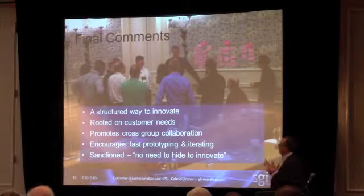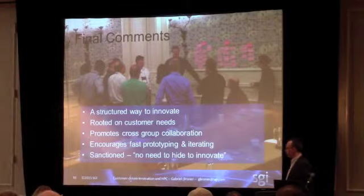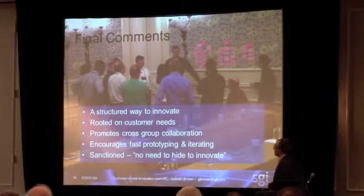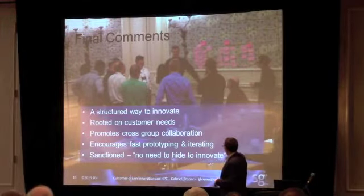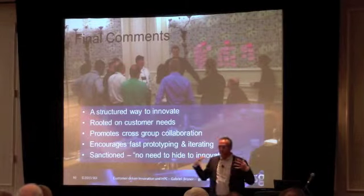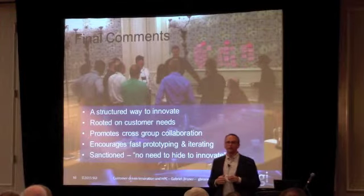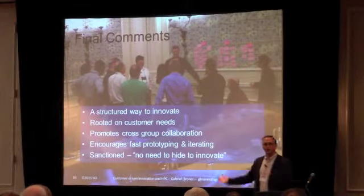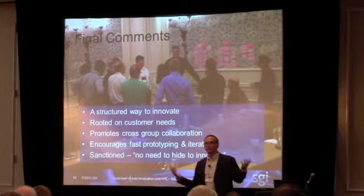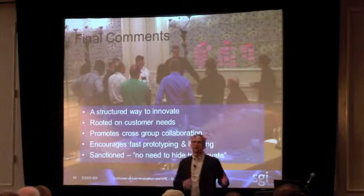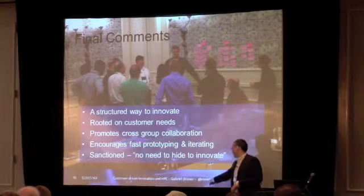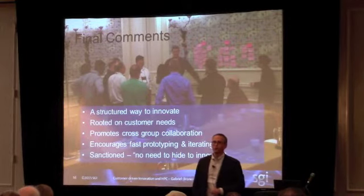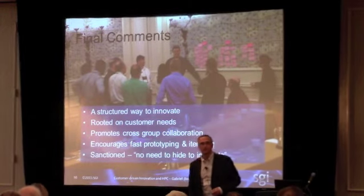My final comments are: this is a structured way to innovate. Most places don't have a structured way to innovate. It's rooted on customer needs. It promotes cross-group collaboration — you bring people from different areas to solve problems and work together; it breaks the silos. It does encourage fast iteration. And one thing that's important: it's sanctioned. When I did this initiative at Ericsson and at Microsoft, it's legal to innovate. Most places, you have to hide to innovate — hide from your boss, there's no place to innovate. Here, it's legal. People are encouraged to innovate; there's a process, a method. You avoid the discussion 'we've done this before.' Having a process allows you to move things forward. If you want to reach me, it's gbrunner@sgi.com. Hope this was useful for you — thanks everyone.